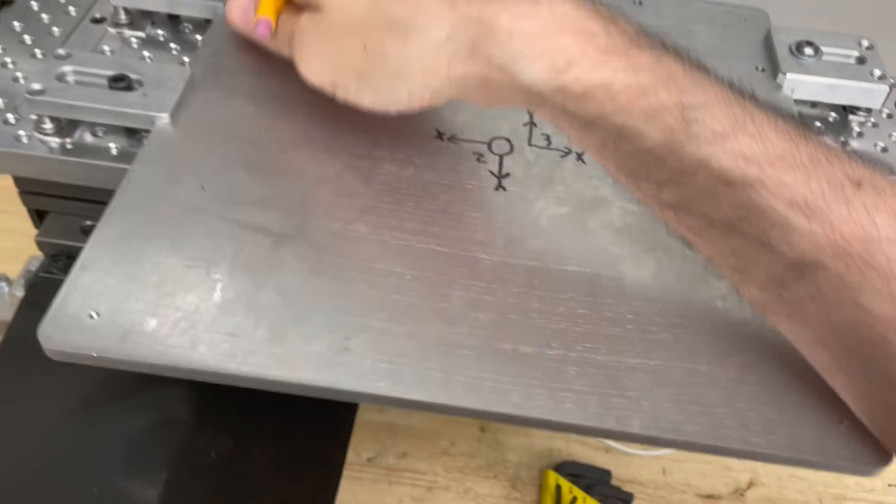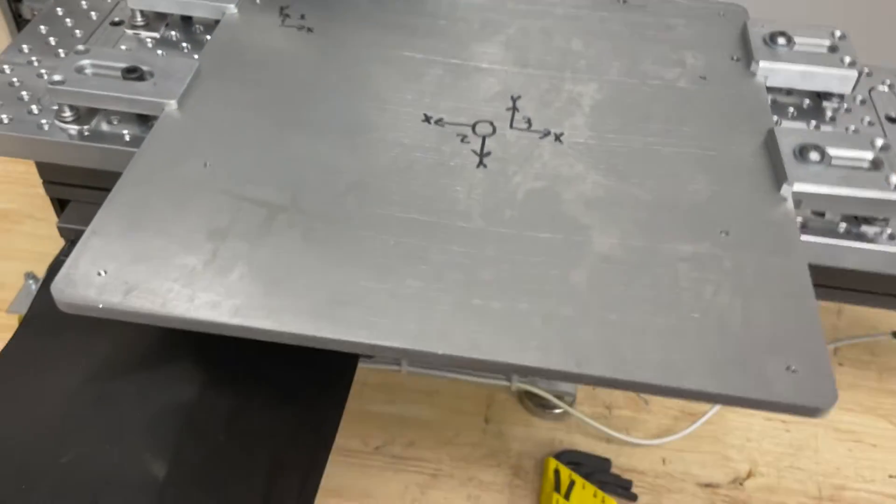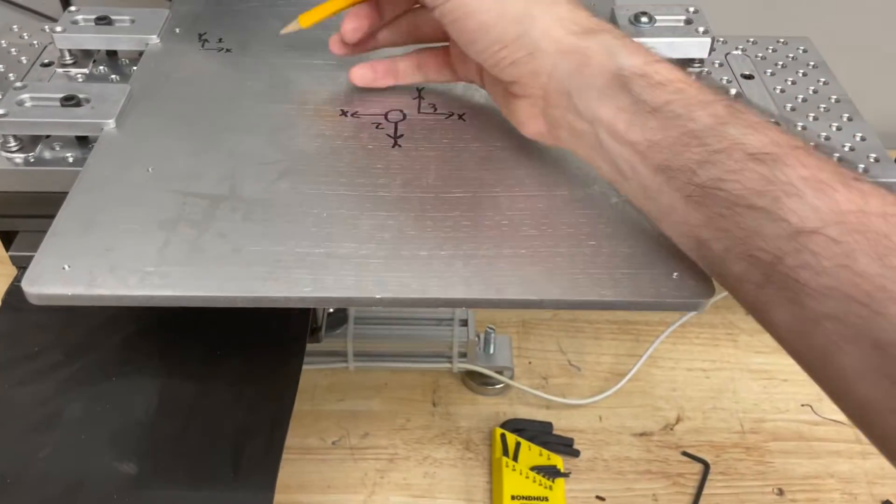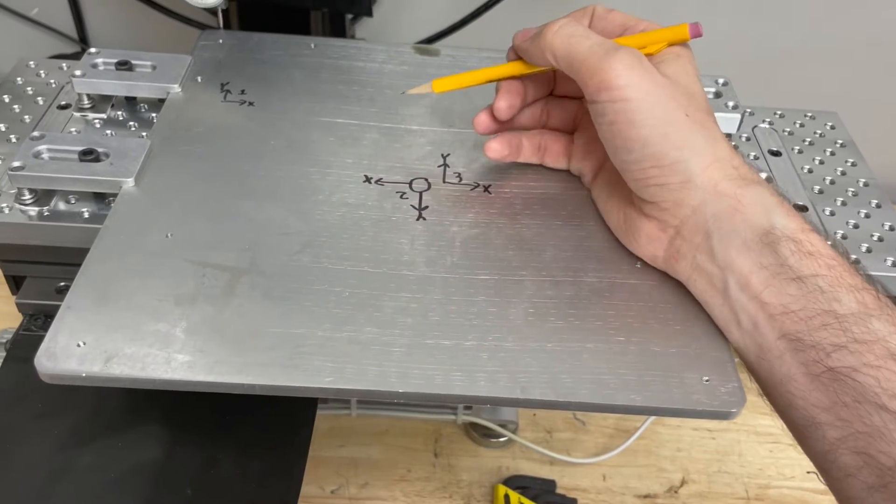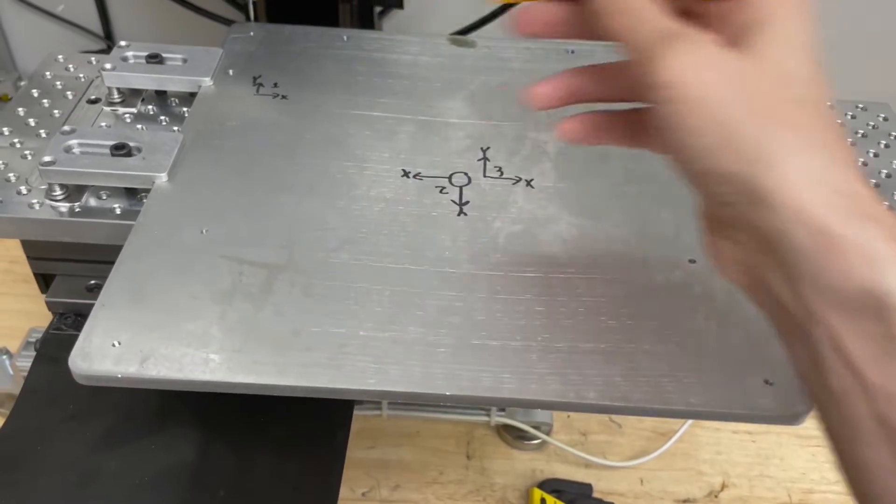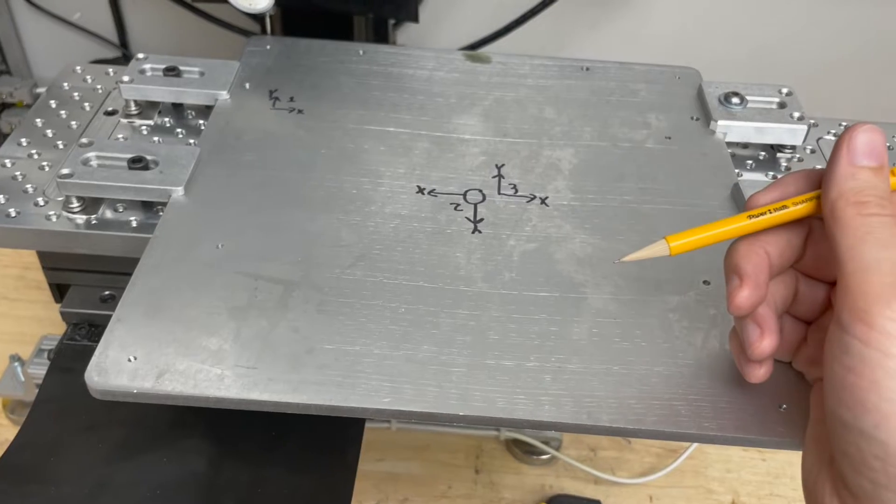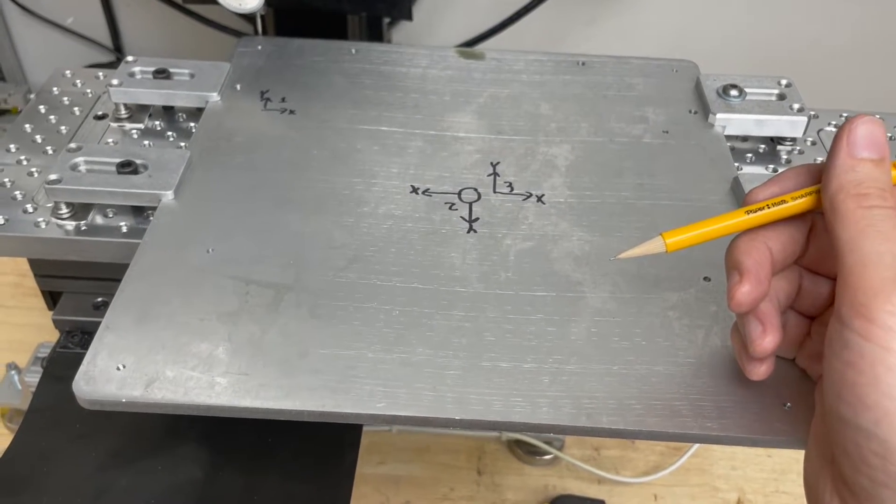So this is a part I had laser cut and after it's laser cut I need to make some pockets that the laser cutting process can't do and drill some holes that are very accurate that the laser cutting process cannot do either.